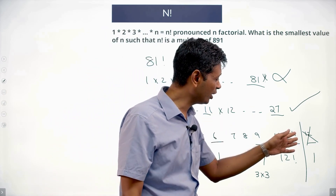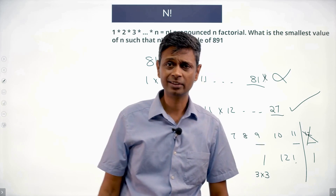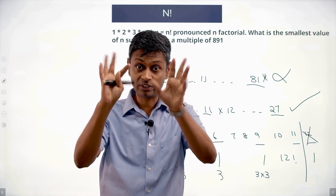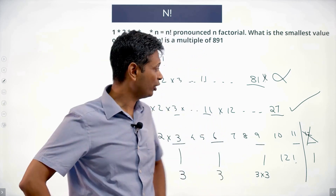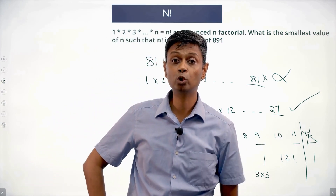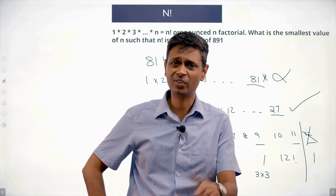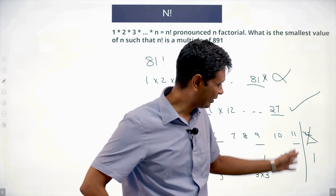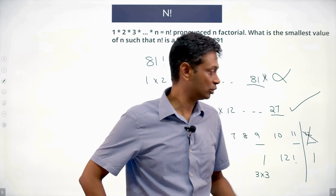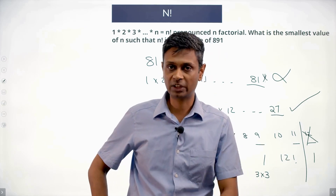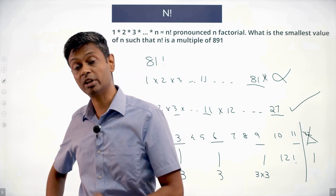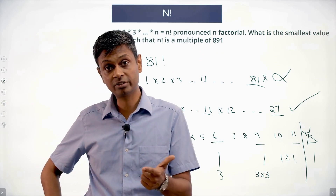So 11 factorial is the answer, and I don't need to look for anything smaller. Before 11 factorial, we simply cannot get a factor of 11, because 11 is prime. No matter how many times we multiply 1, 2, 3, 4, 5, 6, 7, 8, 9, 10 together, we can never produce 11. So the smallest n such that n factorial is a multiple of 891 is n equals 11.